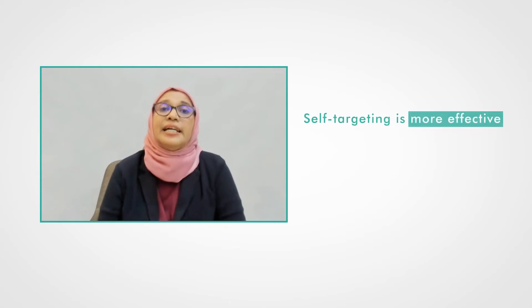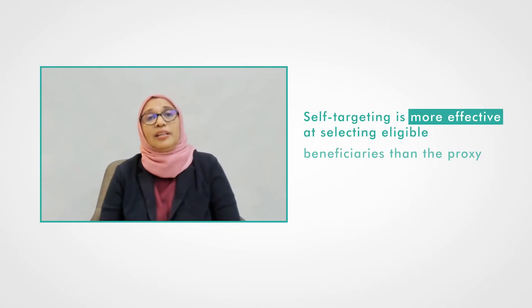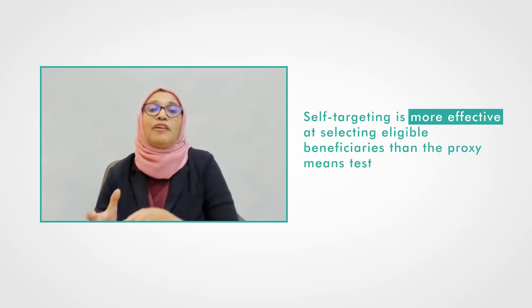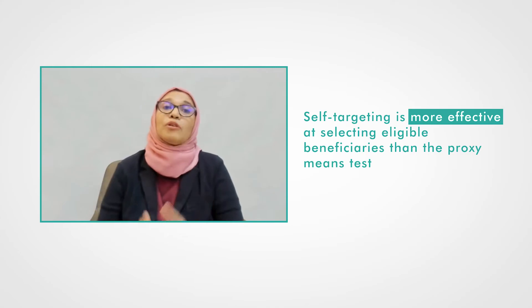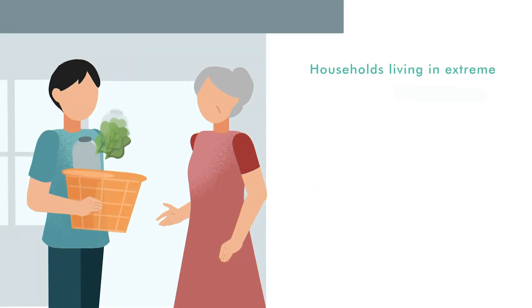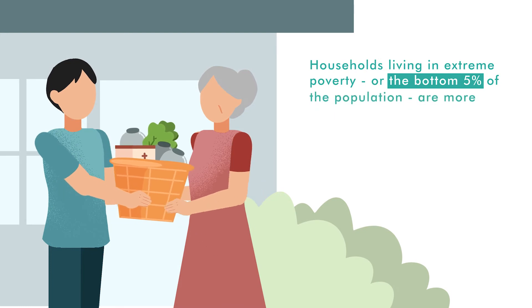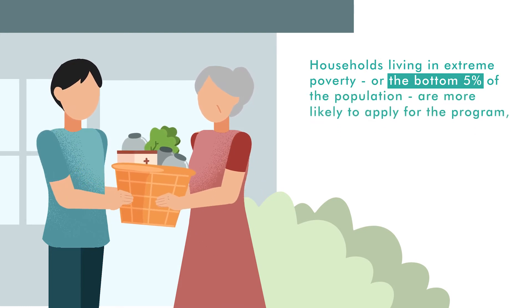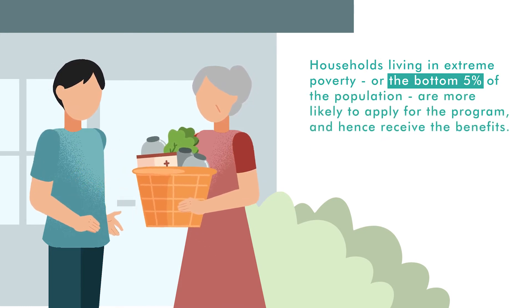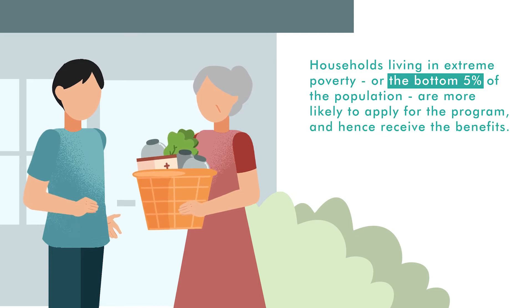Second, self-targeting is more effective at selecting eligible beneficiaries than the proxy means test. Households living in extreme poverty, or the bottom 5% of the population, are more likely to apply for the program and hence receive the benefits. It is also because those who identify as higher income rightly assume that they are not eligible and refrain from registering.